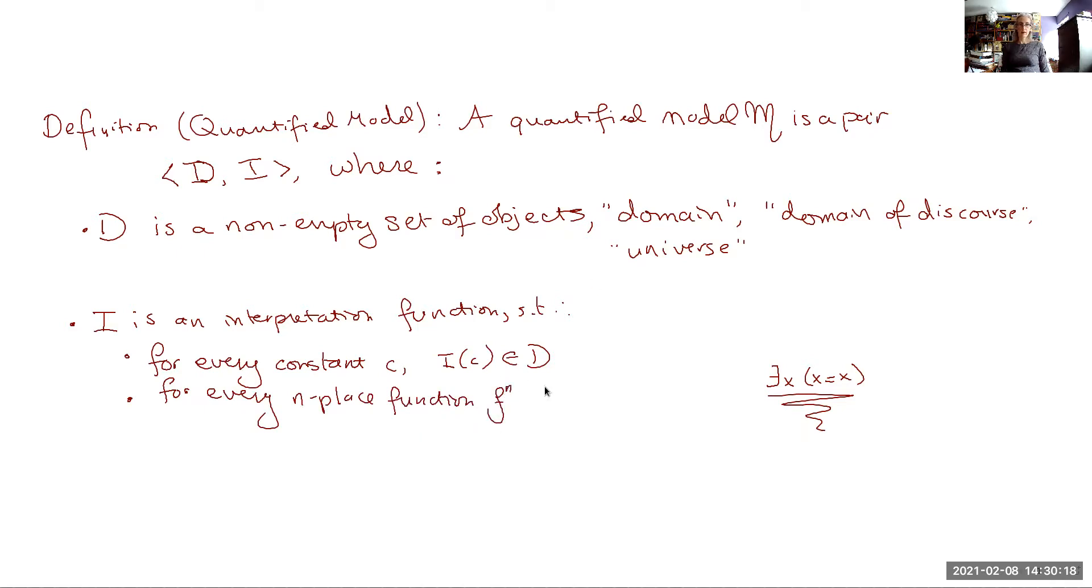For every n place function symbol F, the interpretation of that function is... I'm going to have to erase my tautology. The interpretation of a function symbol F^n is an n-ary function on the domain.